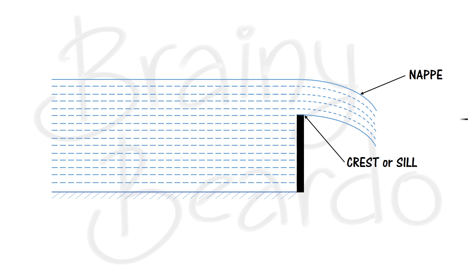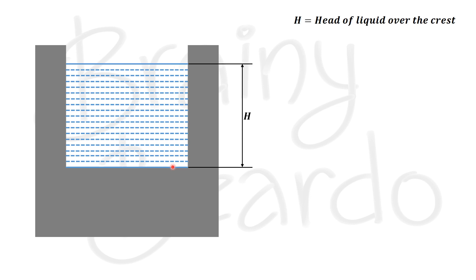To differentiate what a rectangular notch is, we look at the notch from the front side. The different types of notches are based on the shape of the opening — since this opening is rectangular, it is called a rectangular notch. To understand the discharge through this notch, we take H as the height of the top surface of the liquid above the crest, and L as the length of the notch.